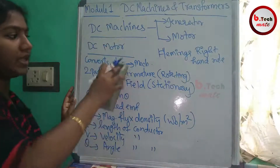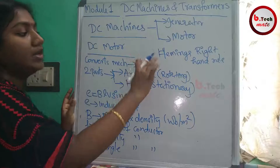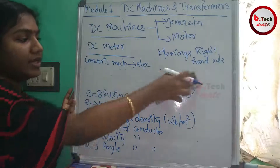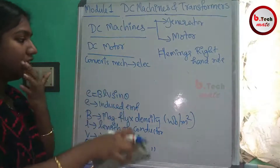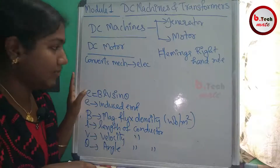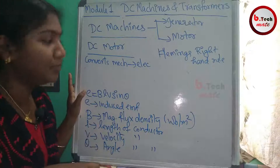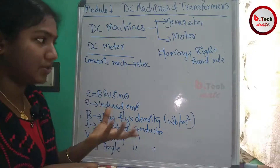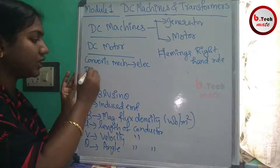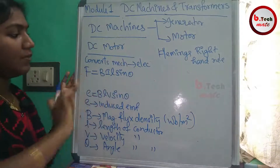Now for the DC motor: what is the conversion? The motor takes electrical input and gives mechanical output — it converts electrical energy into mechanical energy. The working principle is that a current-carrying conductor placed in a magnetic field experiences a force or torque. The magnitude of that force is F = BIL sinθ.